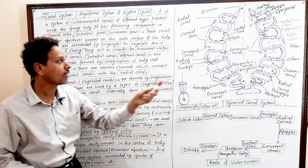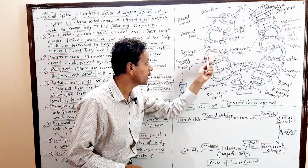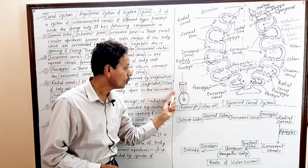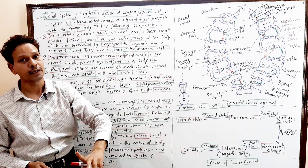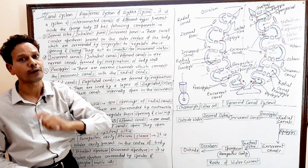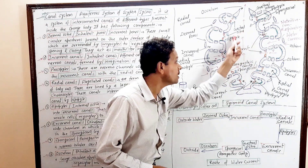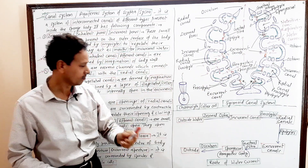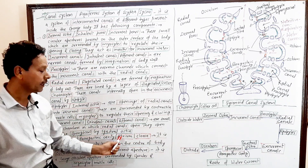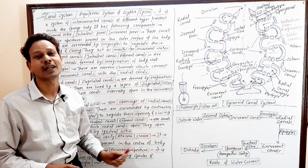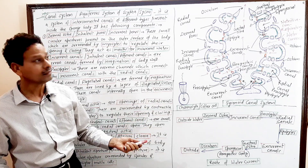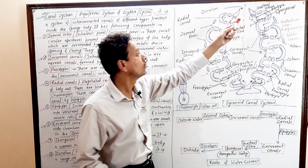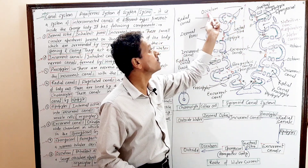The lining of Radial Canals has choanocytes — flagellated collar cells. Another important point: this main body cavity of sponges is the Spongocoel, also called the Paragastric cavity or Atrium. This main cavity is also named the cloaca, and this cloaca opens outside through a wide aperture called the Osculum.